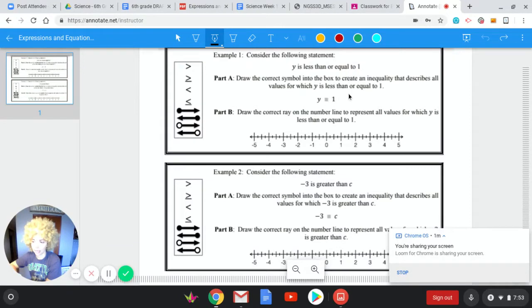So y is less than or equal to one. So when we have less than, y is less than, it looks like a little l so that's our little trick to remember. Less than or equal to means we have to have our line underneath it. So y is less than or equal to one.